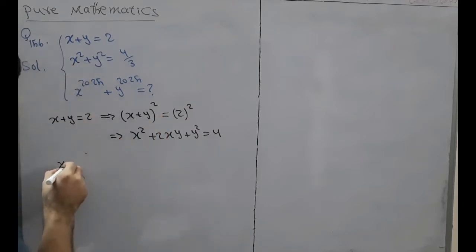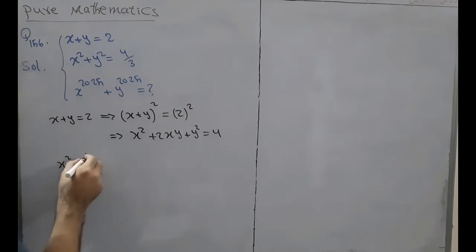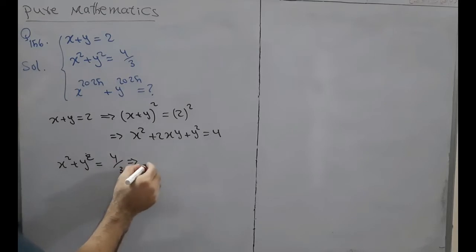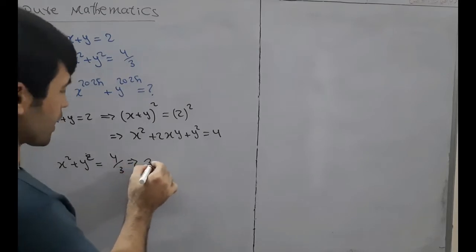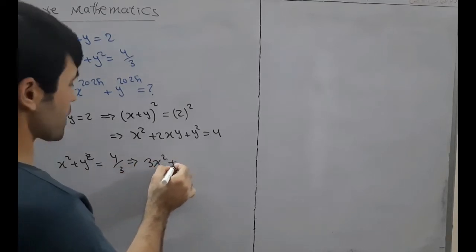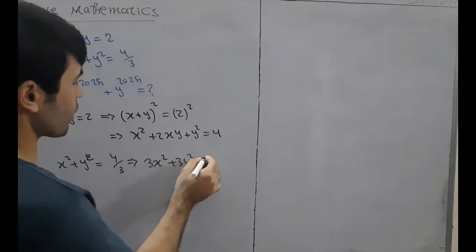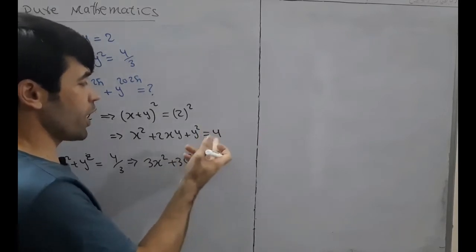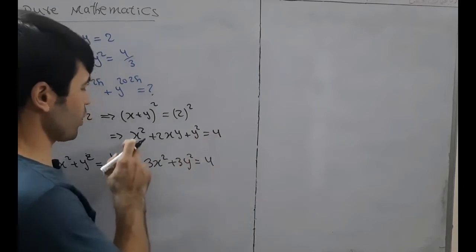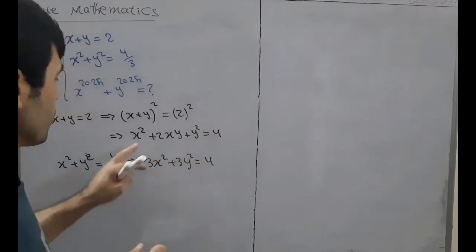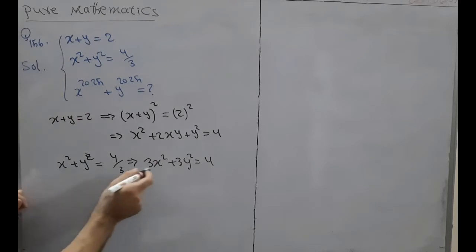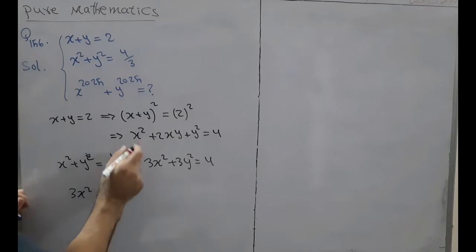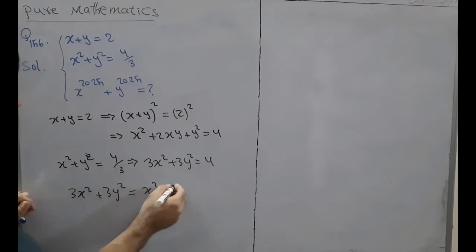We also have x squared plus y squared is equal to 4 over 3, which implies 3x squared plus 3y squared is equal to 4. Since the right sides are both equal to 4, we equate the left sides: 3x squared plus 3y squared is equal to x squared plus 2xy plus y squared.